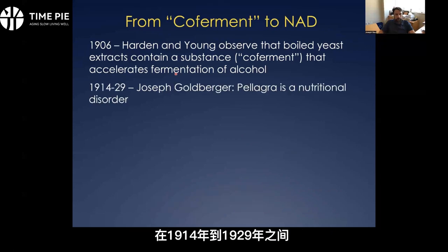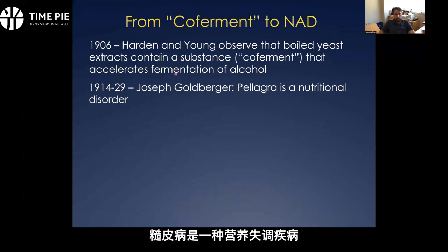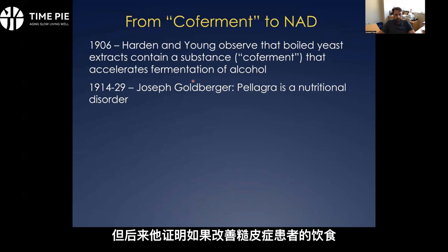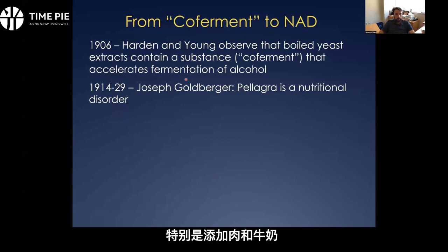Between 1914 and 1929, Joseph Goldberger was active in trying to establish that pellagra was a nutritional disorder. It had been debated whether it was an infectious disease, but he was actually able to demonstrate that if you improved the quality of the diet for people suffering from pellagra — particularly adding meat and milk — you could cure the disorder.